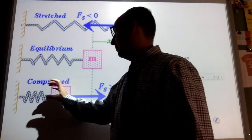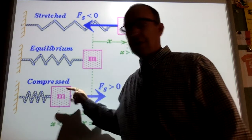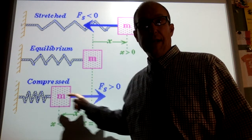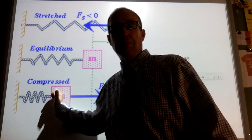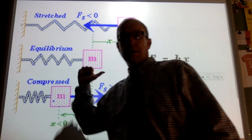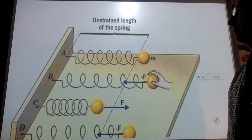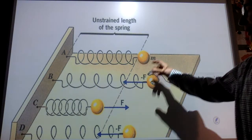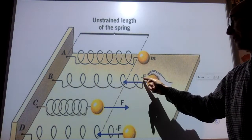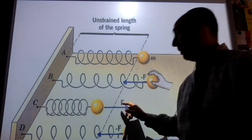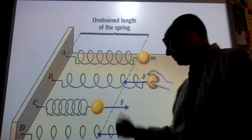If I compress it, I'm pushing it to the left. That's a negative displacement. Now in the spring, there's a positive force going back. And so it's always in the opposite direction. So here, I displace it positively, there's a negative force. Here, I displace it negatively, there's a positive force.